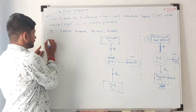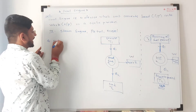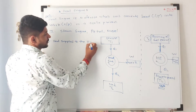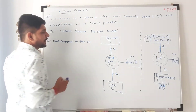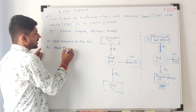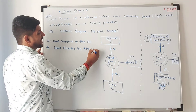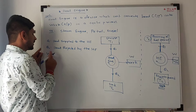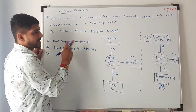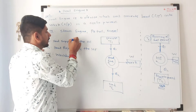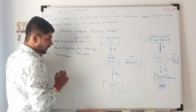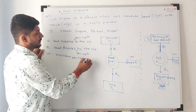Now, Q1 is something but the heat supplied to the heat engine. Q2 is the heat rejected by the heat engine. And W is the work done. We are talking about these per cycle — heat supplied per cycle, heat rejected per cycle, and work done per cycle by the heat engine.